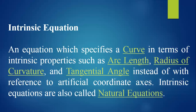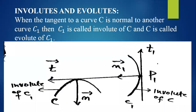Intrinsic equations are also sometimes called natural equations. Next is involute and evolute. In formal language, when the tangent to a curve C is normal to another curve C1, then C1 is called the involute of C, and C is called the evolute of C1.